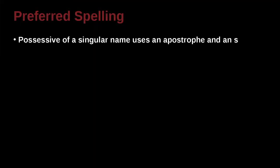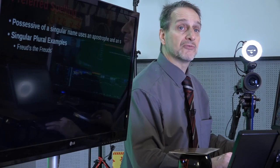Possessive and singular names can use an apostrophe like an S. Now I'm sure you've done this before. And singular plural examples include things like this one here, Freud. Freud, who was a famous psychologist, right? So how would you write Freud?